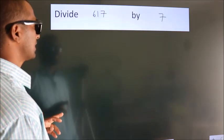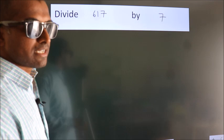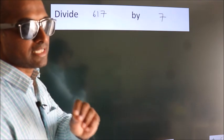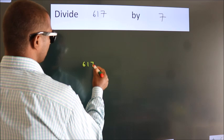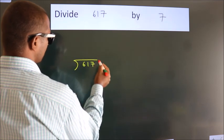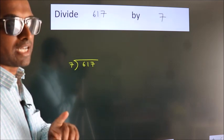Divide 617 by 7. To do this division, we should frame it in this way: 617 here, 7 here. This is your step 1.